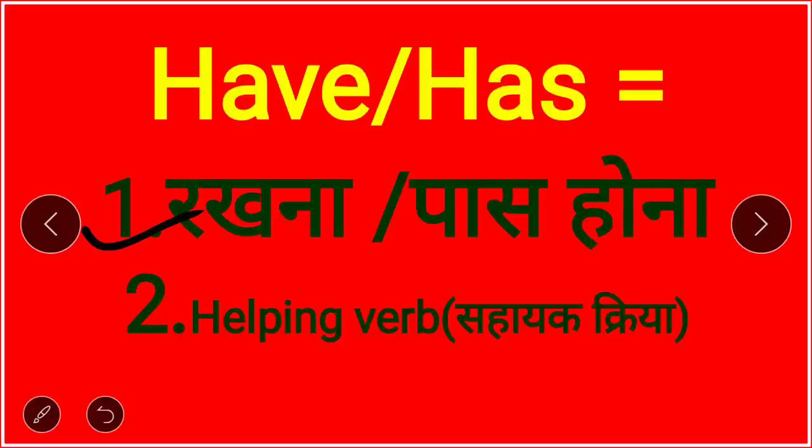The second use is as a helping verb (sahayak kriya). This is also called an auxiliary verb. So remember two things: first, as a main verb; second, as a helping verb (auxiliary verb).